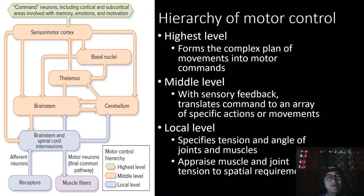The neurons involved in controlling skeletal muscle are organized in a hierarchy of control levels. Each level of the hierarchy has a certain task in motor control. The levels of motor control are arbitrarily divided into the highest level, the middle level, and the local level.